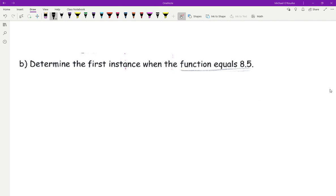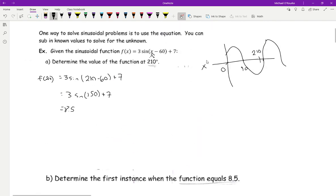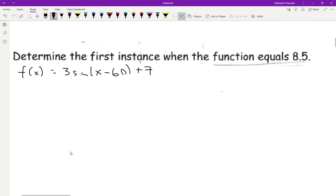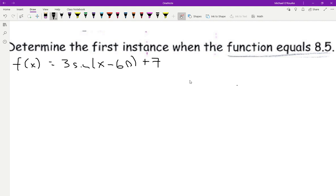We're going to do another one so we get more practice. Now here's the interesting part: we're going to determine the first instant the function is 8.5. So what's my equation again? We have f of x equals 3 sine x minus 60 plus 7. So this time we're given the f of x, we're given the result, we're trying to find x. So 8.5 equals 3 sine bracket x minus 60 plus 7. Now we have to isolate for that x which now comes into some algebra.